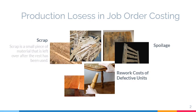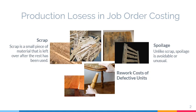Scrap is a residual or leftover piece of material, such as trimmings and sawdust, and normally occurs in a manufacturing process. Unlike scrap, spoilage is avoidable and unusual, and does not occur in every production run. Spoiled units have mutations that are either irreparable or too costly to repair. An example of spoilage is wood that has started to rot due to unintended exposure to elements.